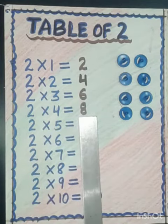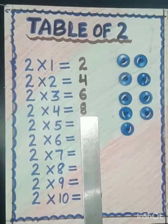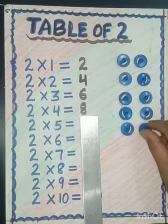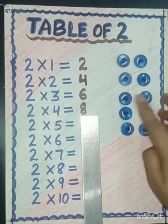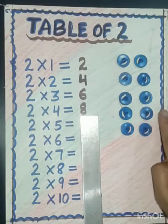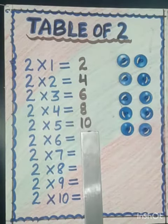Two fives are — again we will add two. So let's count: one, two, three, four, five, six, seven, eight, nine, ten. So two fives are ten.